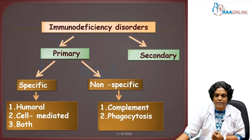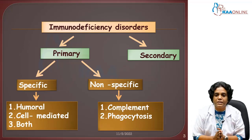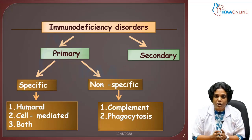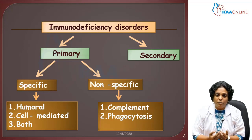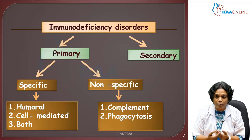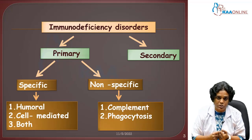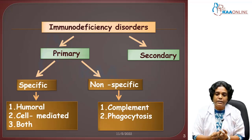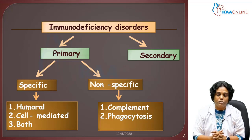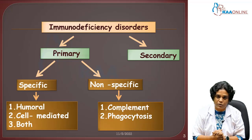What is an immunodeficiency disorder? Our immune system is multifactorial and very complex. Abnormality or malfunctioning of one or two components of the immune system can lead to immunodeficiency disorders. These are broadly classified into primary immunodeficiency disorder and secondary immunodeficiency disorder.